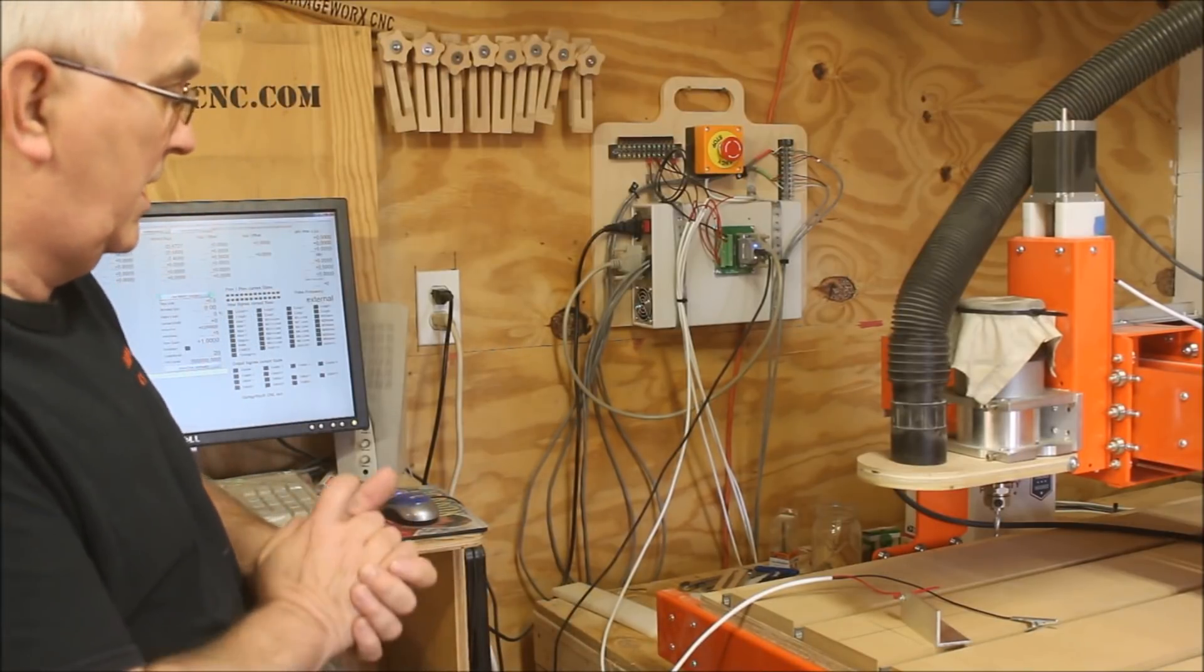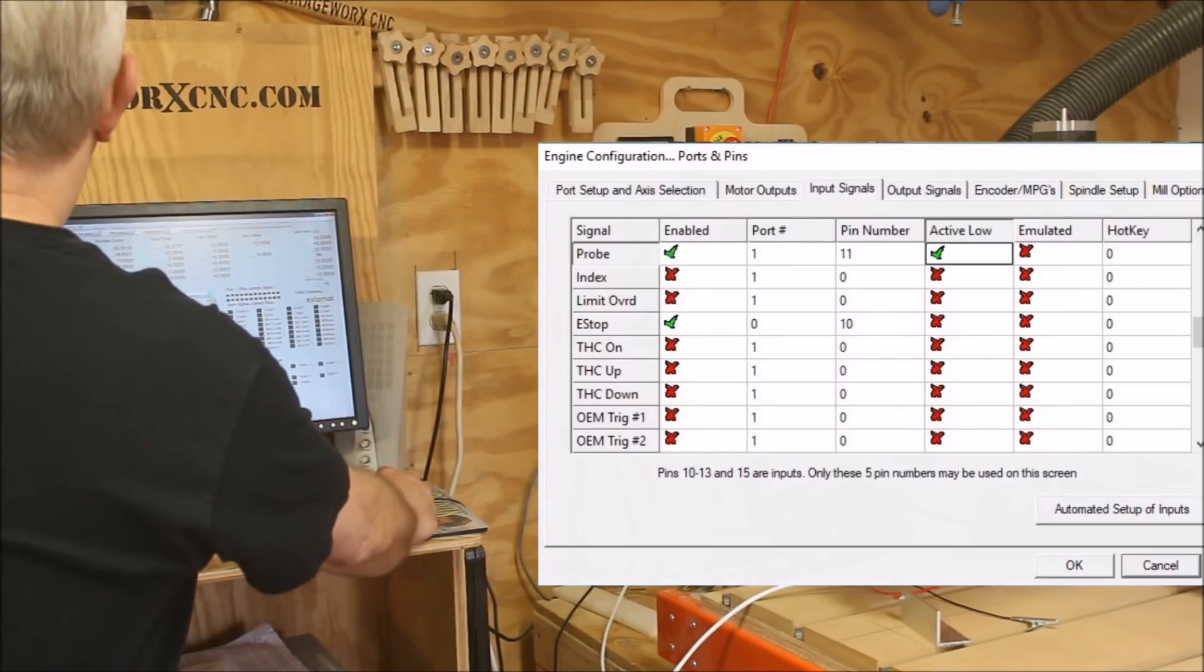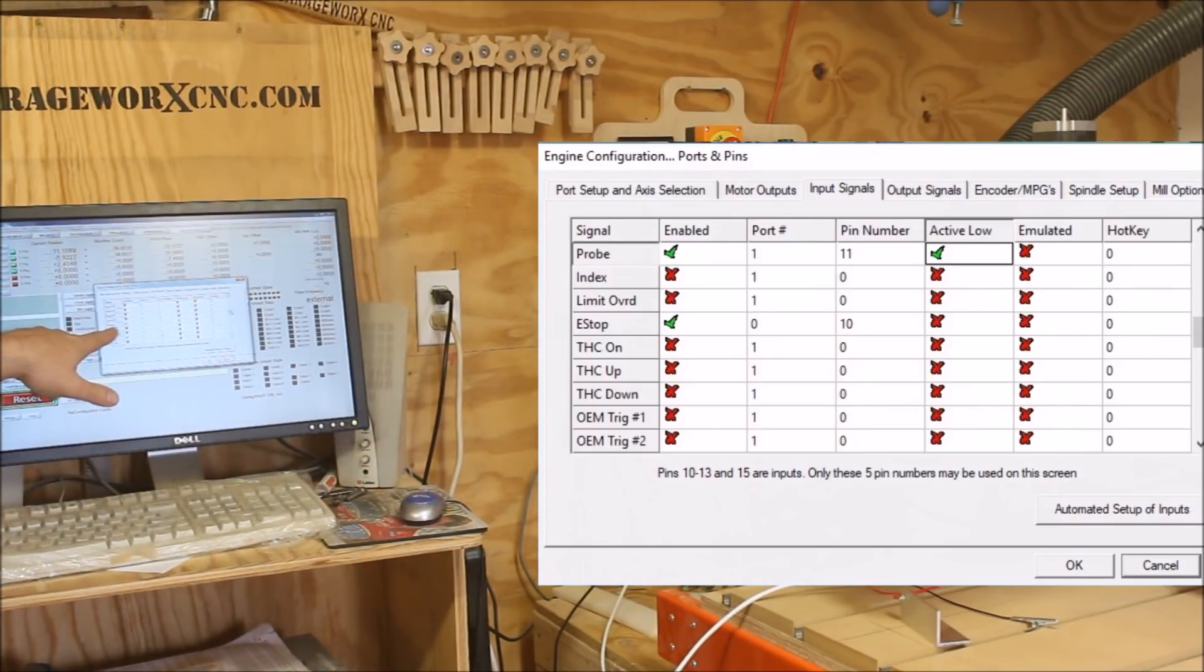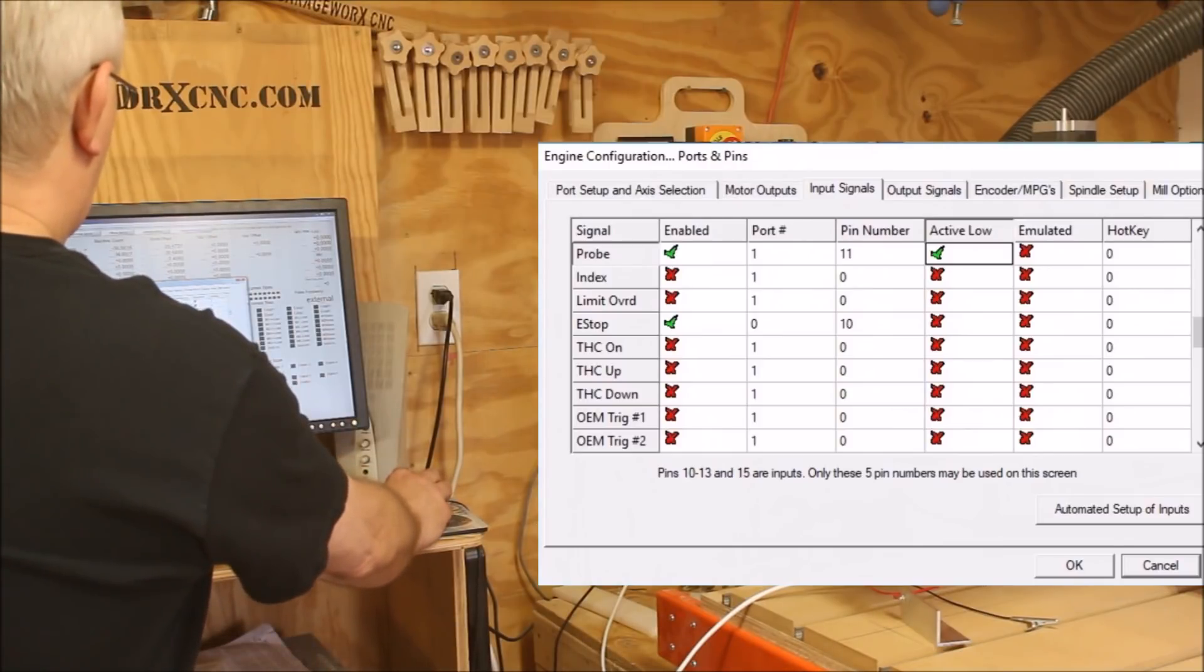I have in Mach 3, I have my digital, or actually use the probe, I have that enabled. I have port 1 and I have it set to pin 11, and I actually have the check mark there for it to be active low. That's how mine is set up in Mach 3.